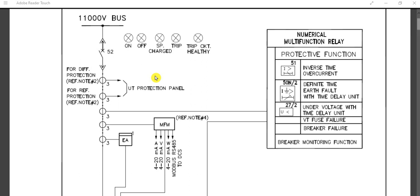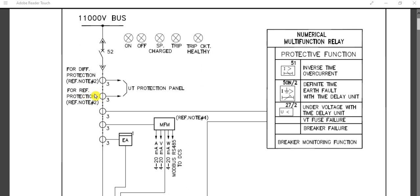For protection, since this feeder is coming from a unit transformer, we have a differential protection relay (87). For this differential protection, we need a CT (current transformer) on the 11kV switchgear side — this is the differential CT, which will be connected to the 87 differential relay. Another set of CTs is located on the upstream side. The second CT is for REF (restricted earth fault) protection.